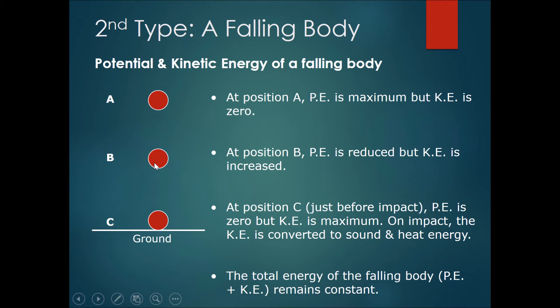The ball continues to fall until the point just before it hits the ground. At position C, just before it hits the ground, the potential energy is zero, which means it's almost there. But the KE is the maximum. It reaches its maximum speed just before it hits the ground. When the ball finally hits on impact, there will be a pop sound. This pop sound is actually the conversion of this kinetic energy into sound and heat energy.